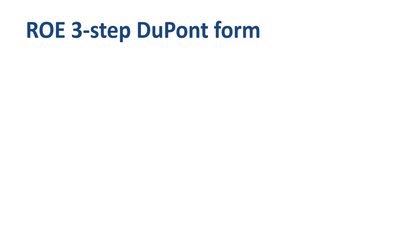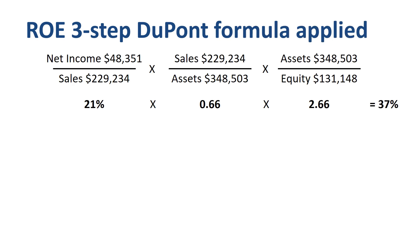Zooming out from the ROS detail to the three-step DuPont ROE formula — the second component, asset turnover of 0.66, how does that stack up?